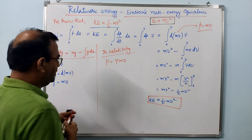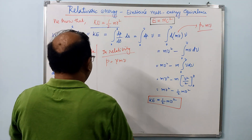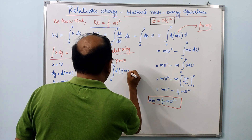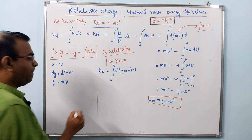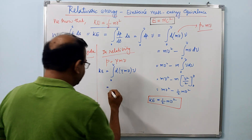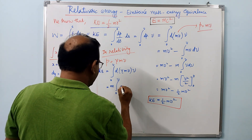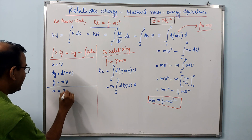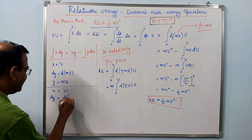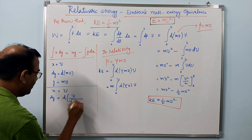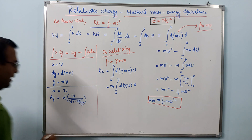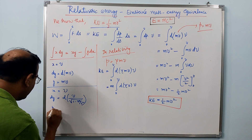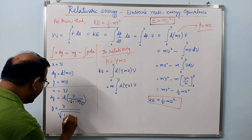We now substitute the relativistic momentum into the integral to arrive at kinetic energy. Kinetic energy equals the integral from 0 to v of d(γmv) times v. Since m is constant, we have m times the integral from 0 to v of d(γv) times v. Here x is v and dy is d(γv), where γv equals v over the square root of 1 minus v²/c², since gamma is the Lorentz factor 1 over square root of 1 minus v²/c².